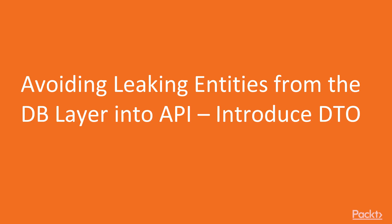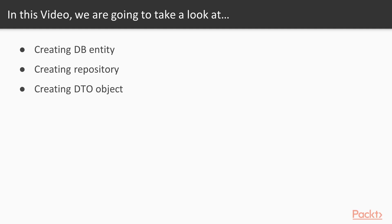This first video focuses on avoiding leaking entities from the database layer into the API by introducing the data transfer object. We'll start by creating a database entity, then create a repository, and finally create a data transfer object that will act as a proxy between the database layer and the API layer.